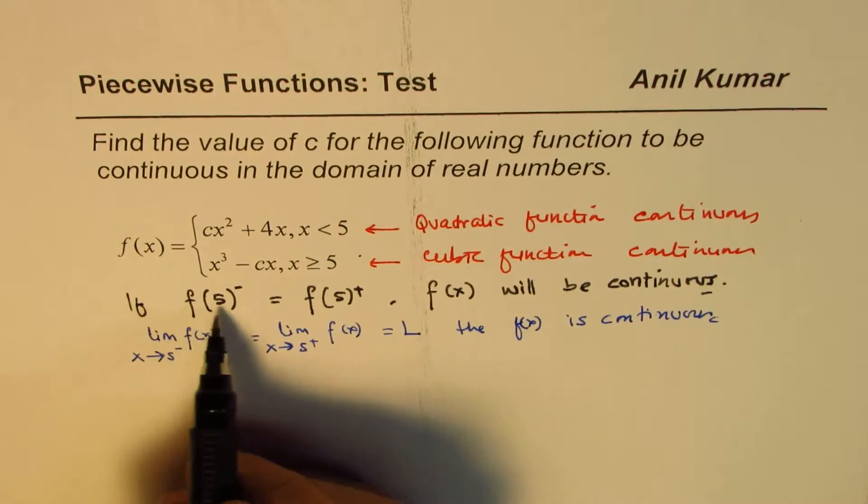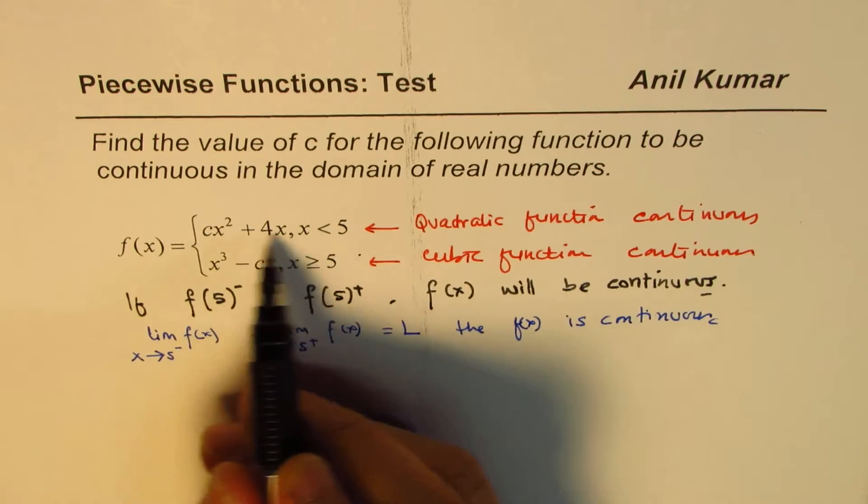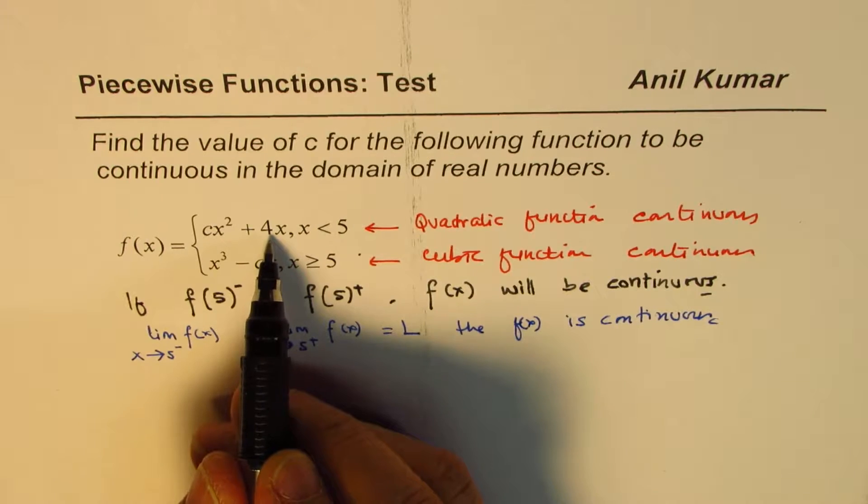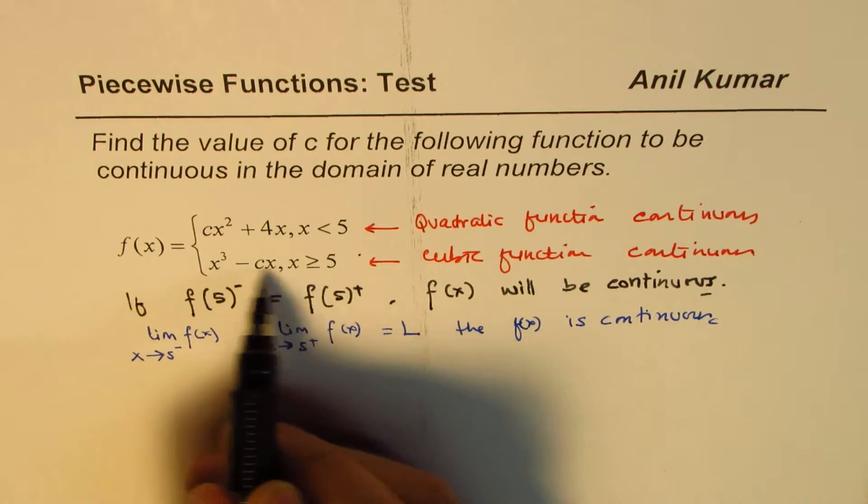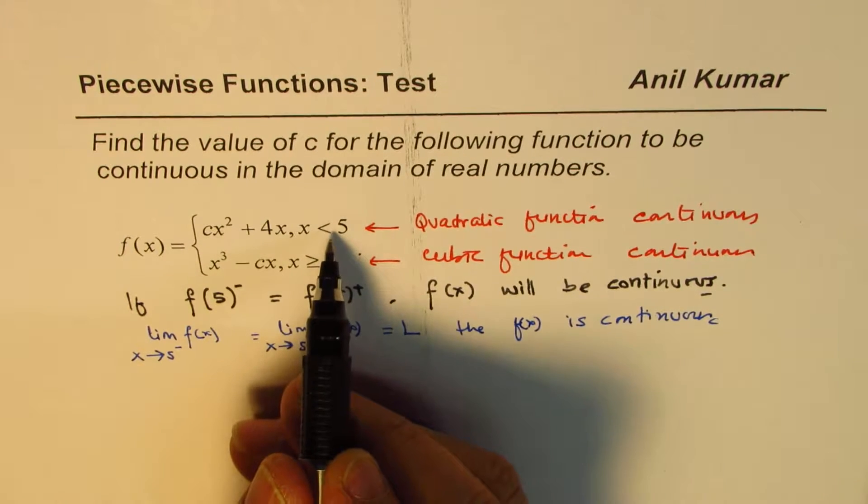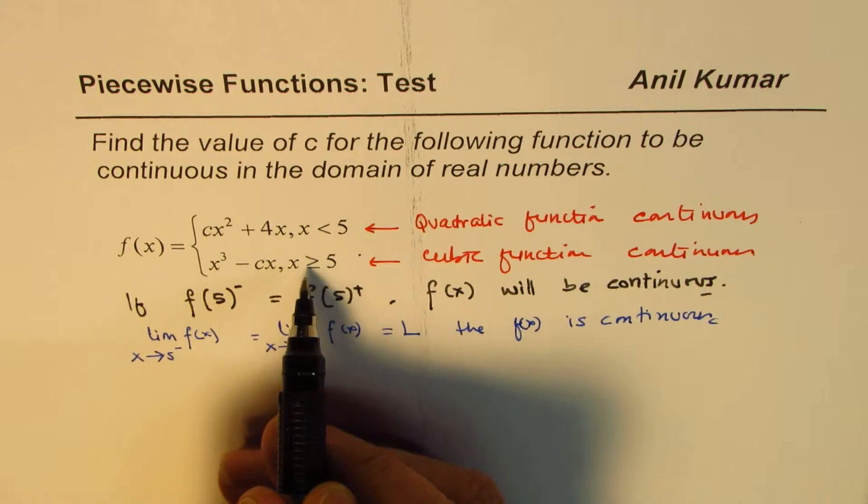if you're approaching from the left side, that means it is less than 5. We are working on this branch, cx squared plus 4x. If you're approaching from the right side, you're working on this cubic function. And both these values, this should end at and this should begin at the same value for the function to be continuous.